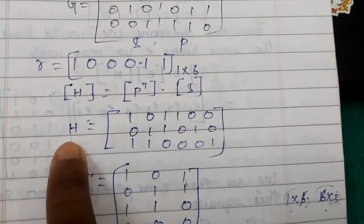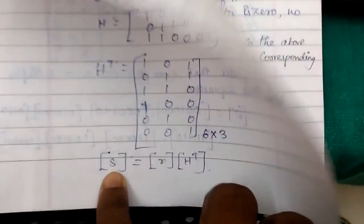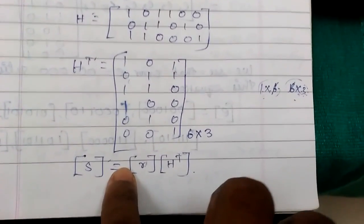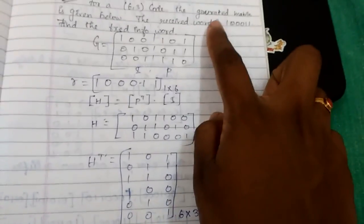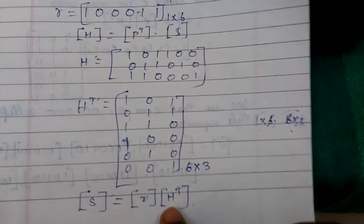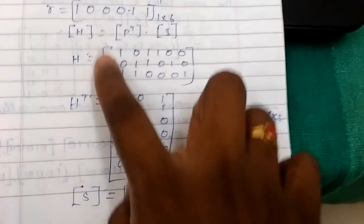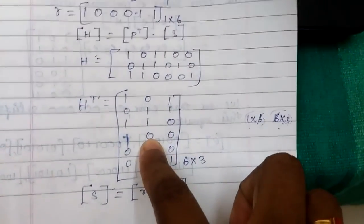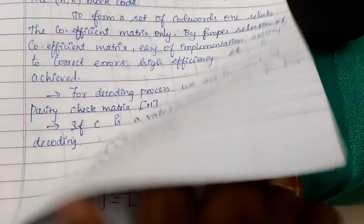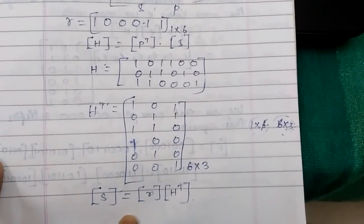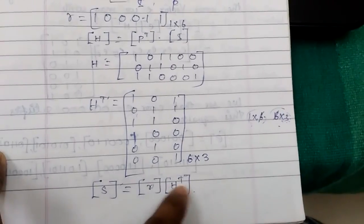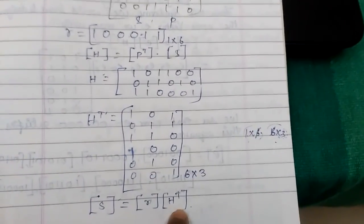Once we know H, we can find the syndrome S. The formula for syndrome is S = r × H^T, where r is the received word given by the problem and H^T is the transpose of H — obtained by writing the rows of H as columns. So the syndrome is the received word multiplied by H transpose.